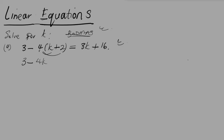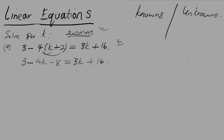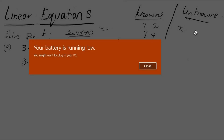Negative 4 multiplied by 2 gives negative 8, and this equals 3k plus 16 on the right side. From there we separate the knowns from the unknowns. The knowns are specific numbers — 1, 2, 3, 4, 5 — numbers we already know. The unknowns are variables, depending on what you're working with at the time.